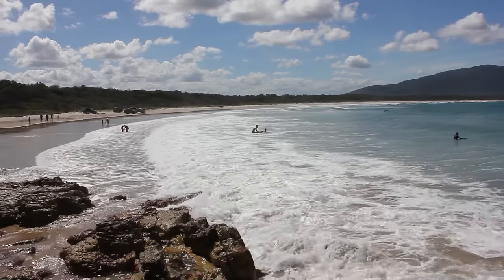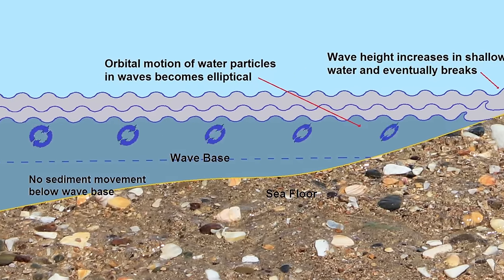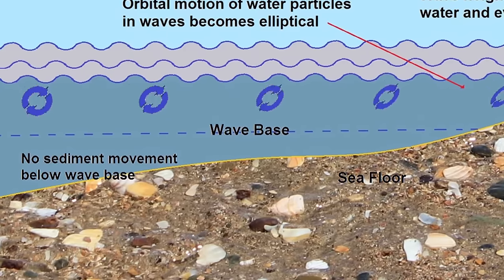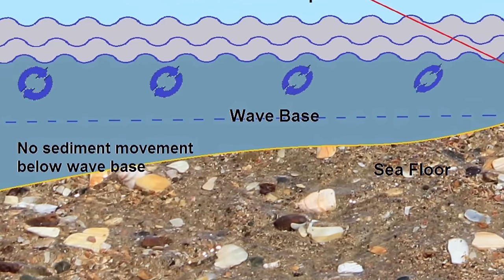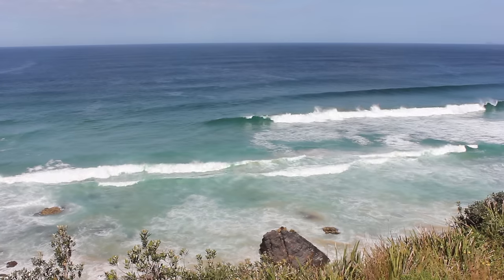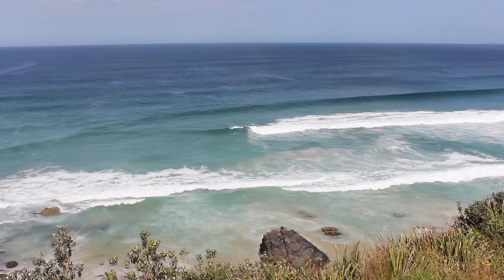So what happens when waves reach the coast? There is a maximum depth to which waves will cause any significant water movement. We call this the wave base. Below the wave base, waves have no impact on the sediments below. However, when waves enter shallow water the usual orbital motion of water becomes elliptical, the waves slow down and become steeper and higher. This is called shoaling.